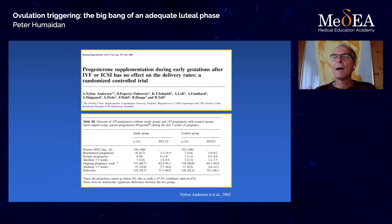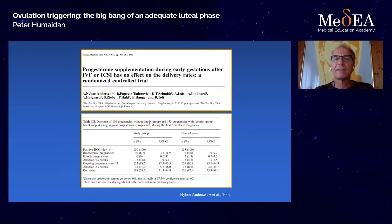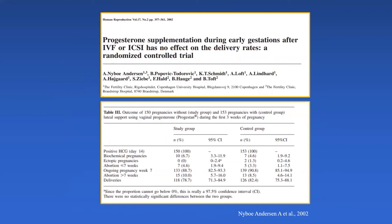Is it true that we could stop luteal phase support in a good HCG-triggered implanting embryo — could we stop on the day of the pregnancy test? A Danish group looked into this: two groups triggered with HCG, one stopped vaginal support on the day of the pregnancy test, the other continued until eight weeks. There was no significant difference whatsoever in live birth rate, ongoing pregnancy, or early pregnancy loss. So physiology tells us the truth — in a standard patient triggered with HCG with a good HCG level, you don't need to add more vaginal progesterone after the day of the pregnancy test. We have been doing this in our Danish and Nordic units since this paper came out.